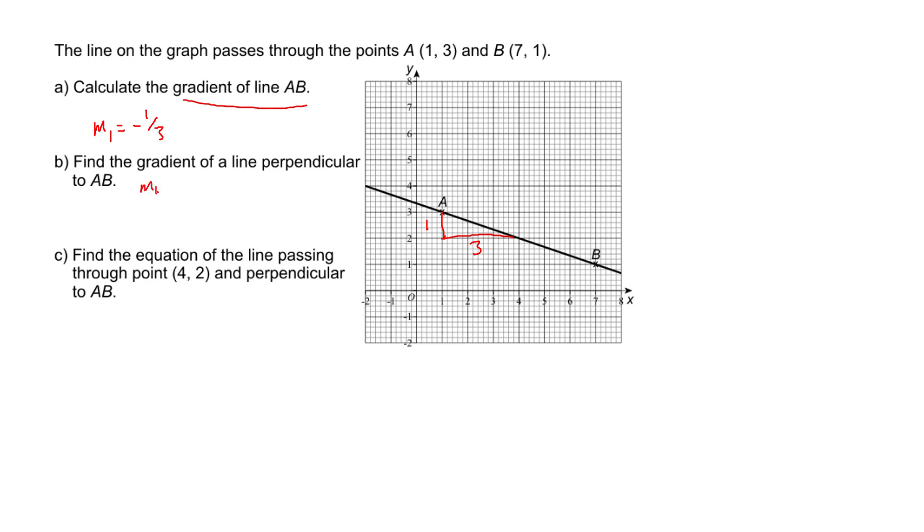Right, so m1 times m2 has to equal minus 1. So m2 must equal 3, because 3 times minus a third equals minus 1. So using the y equals mx plus c skills, we've got y equals 3x plus c. We need to substitute that coordinate in. So we've got 2 equals 3 times 4 is 12 plus c. So we minus 12 on both sides to find the c. So that's going to be minus 10 equals c. So the final answer has got to be y equals 3x minus 10. And I'm hoping you see, that's grade 7 minimum. I'll say that's 7 plus.